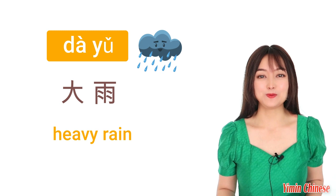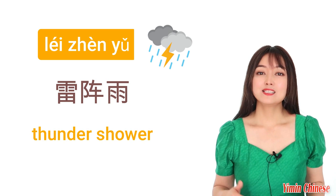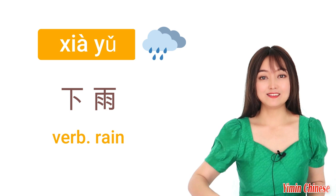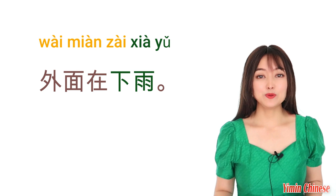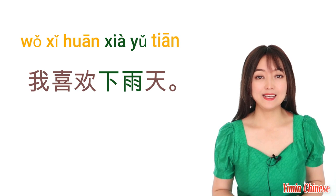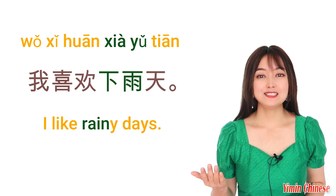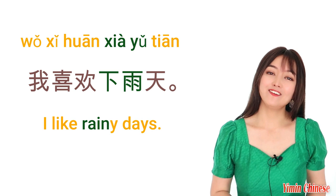大雨就是很大的雨。我们还有雷阵雨，it's a thundershower. Now the verb for rain is 下雨. 比如说，外面在下雨。It's raining outside. 还有，我喜欢下雨天。I like rainy days. 在家里看书，睡觉，很舒服。你呢？你喜欢下雨天吗？You can tell me in the comment section.